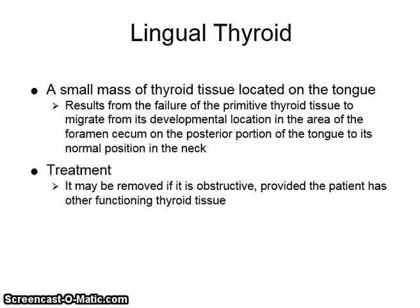Lingual thyroid is a small mass of thyroid tissue located on the posterior portion of the tongue. It results from the failure of the primitive thyroid tissue to migrate from its developmental location in the area of the foramen cecum on the posterior tongue to its normal position in the neck. It may be removed if it is obstructive, provided the patient has other functioning thyroid tissue.